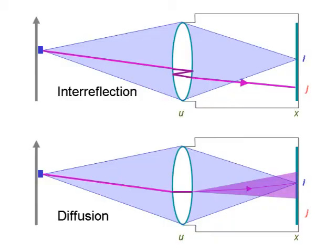Glare can be decomposed into two main components: reflections between surfaces of lens elements, and scattering due to diffusion by the lens elements.